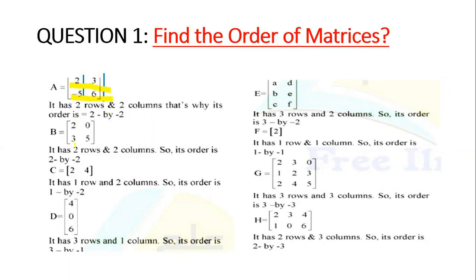In this case, the number of rows and number of columns is 2. So we have a 2×2 order.